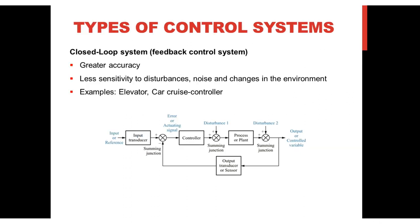The main advantage of closed-loop systems are greater accuracy, less sensitivity to disturbances, noise, and changes in the environment. Two examples of closed-loop systems are elevators and cruise control systems in cars.